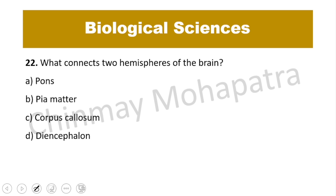Question 22: What connects the two hemispheres of the brain? The brain has left and right hemispheres — what connects them? The right answer is the corpus callosum.